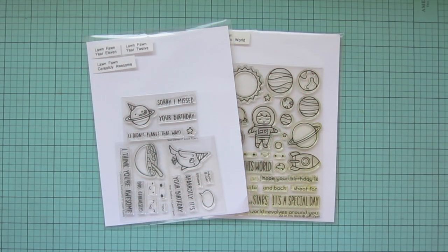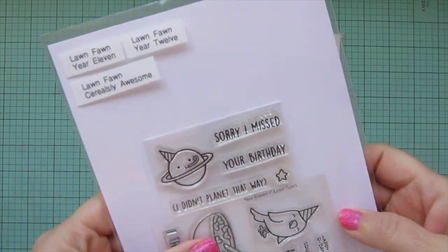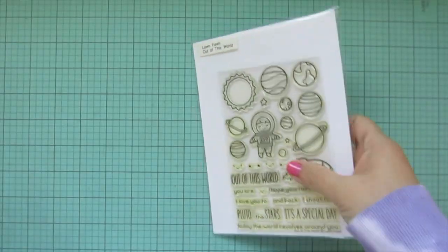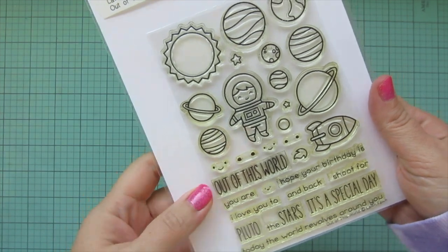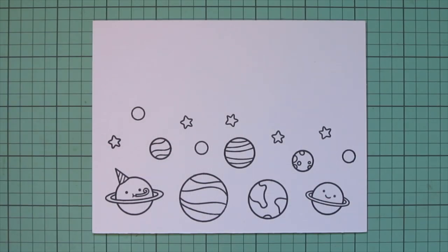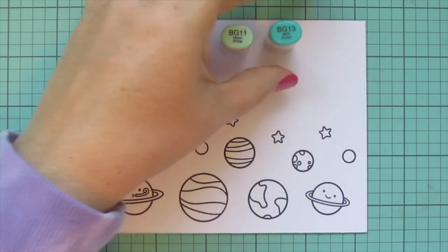Hey friends, it's Kristi. Welcome back to my channel. Today I'm going to be making a card using Lawn Fawn's Year 11 and Out of This World. I've stamped the images I'll be using on Spectrum Noir Ultra Smooth Premium White cardstock with Lawn Fawn Jet Black ink, and I'll be coloring with my Copic markers.